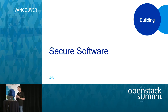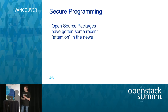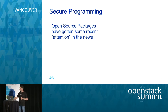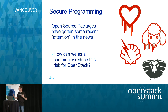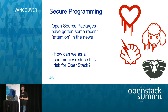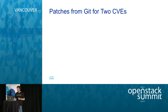OpenStack is an open source software project, so if we want to build a secure cloud, we need to start from the very beginning with secure programming. Some of our brothers and sisters in the open source world have gotten some bad press lately. OpenSSL has gotten hit with Heartbleed and Poodle. Bash got hit with Shellshock. Just last week, some hypervisors were affected by Venom. The question we as a community should be asking is: how can we reduce the risk of this happening to OpenStack?